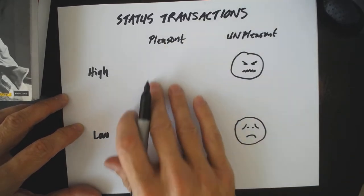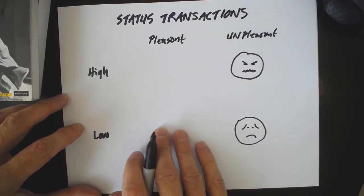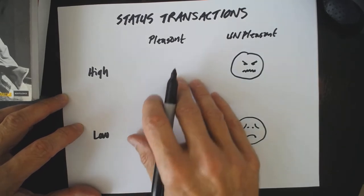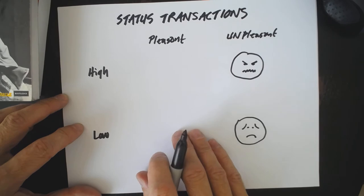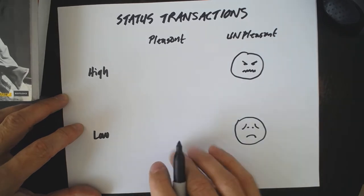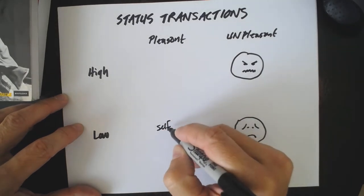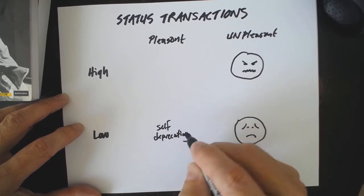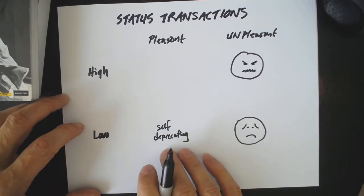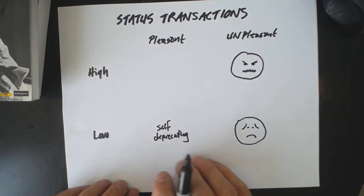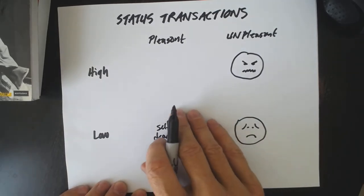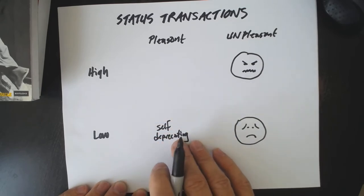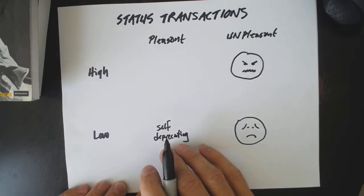There are comedians that play with these status transactions. Rodney Dangerfield was famous for 'I don't get no respect.' He's playing pleasant low status — funny in his self-deprecating way. And when you're a stand-up comedian on stage getting invited to the Johnny Carson show and making millions of dollars, this sort of self-deprecating humor can work out really well for you.